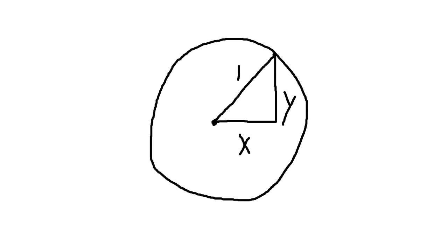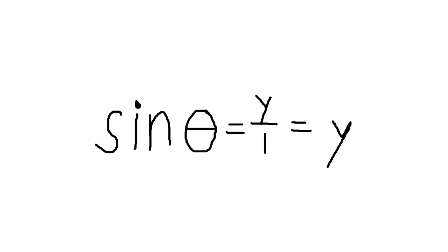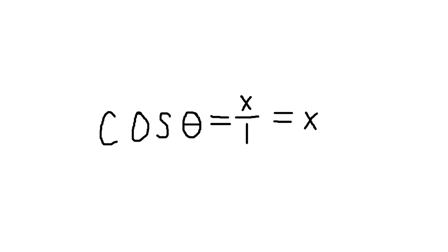Suddenly, the hypotenuse is just the radius of a unit circle, which is 1. That means that sine of theta, opposite over hypotenuse, would be y over 1, or just y. Cosine of theta, adjacent over hypotenuse, would be x over 1, or just x.